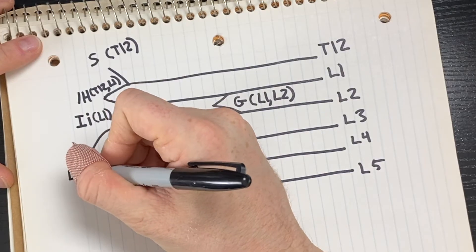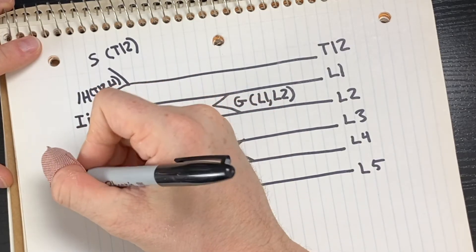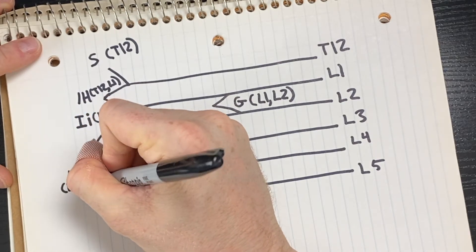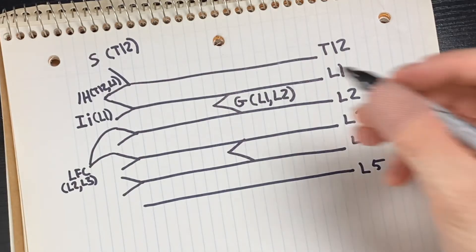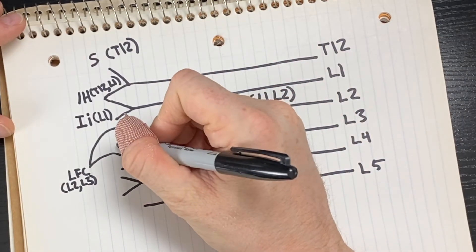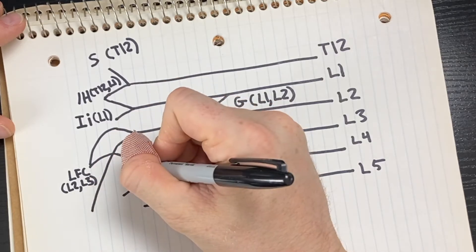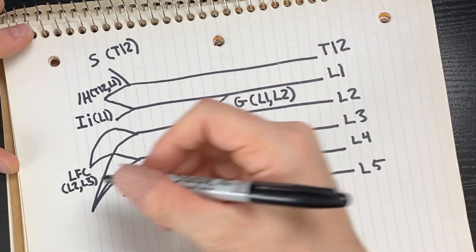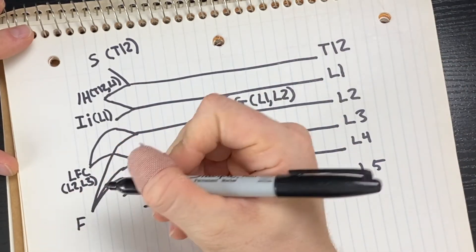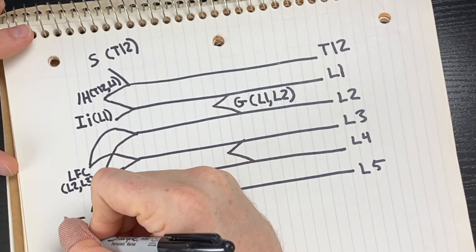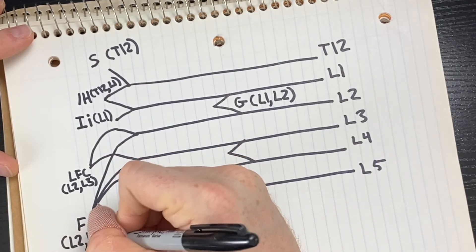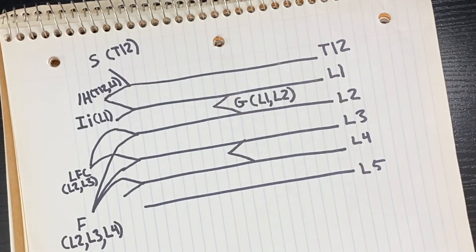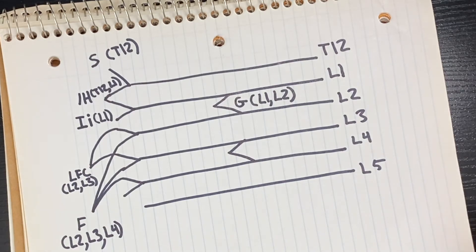Next we're going to draw a line from the bottom of L2 and L3 and the top of L4 and have those all join into one line just like so, and this is going to be the femoral nerve, which is going to have innervations from all three.